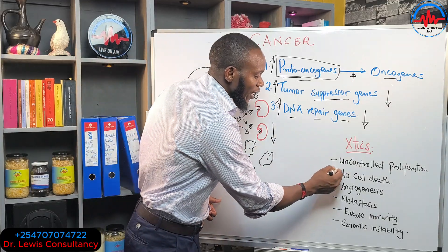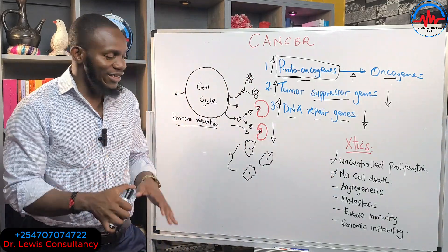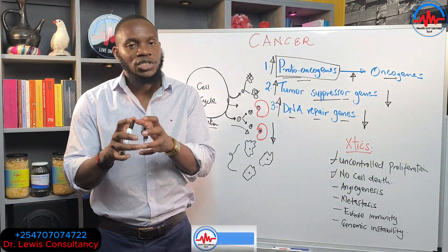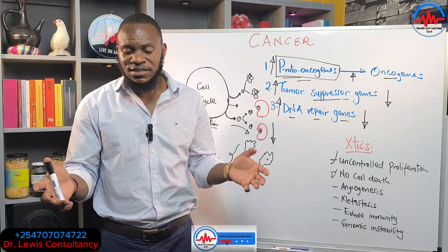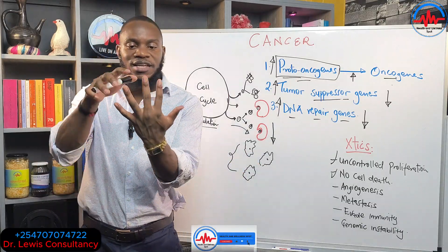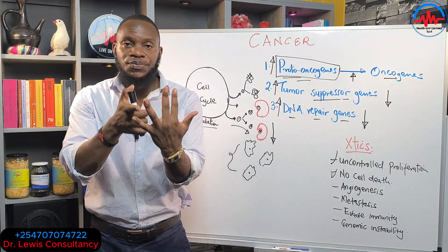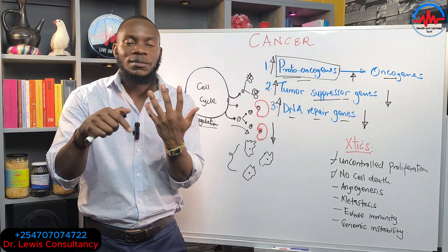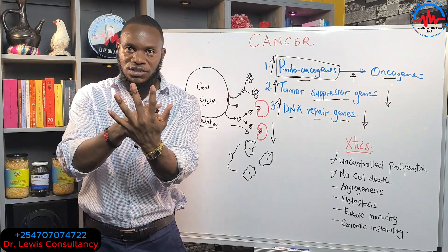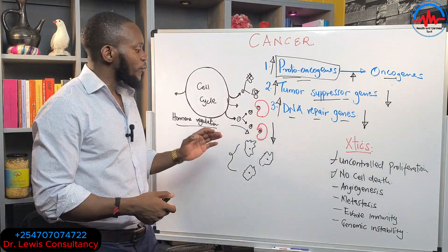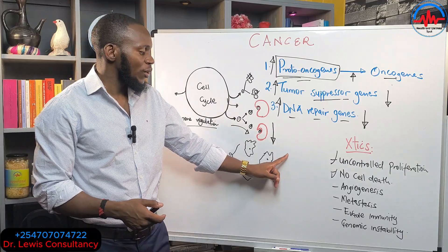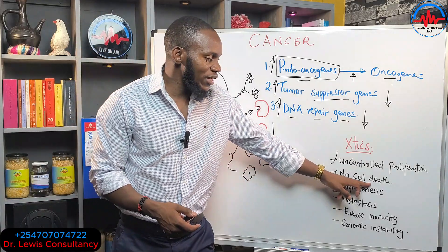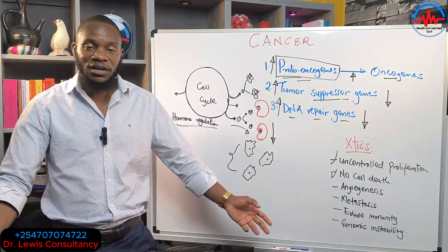Number two: cancer cells cannot die — they hardly die. Because remember, any cell in the body has to grow, mature, serve its purpose, and then die — like red blood cells, which die after 120 days. This is called apoptosis, or programmed cell death. Every cell has this program. Apoptosis is the body's mechanism for destroying aged or malfunctioning cells. But cancer cells avoid the mechanisms of cell death, so they live longer — and that is a problem.